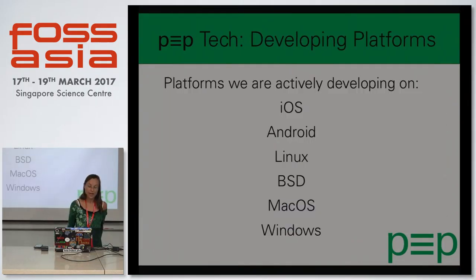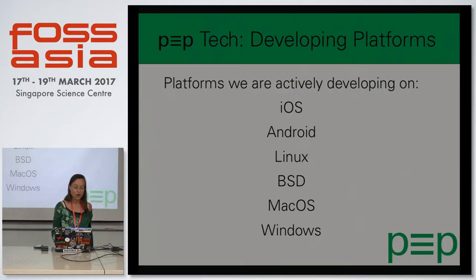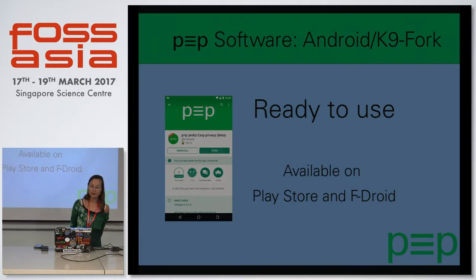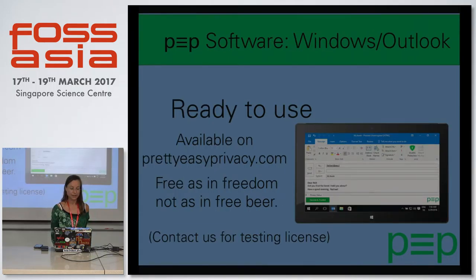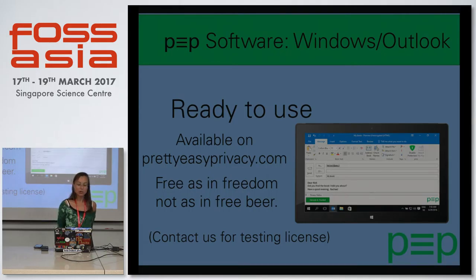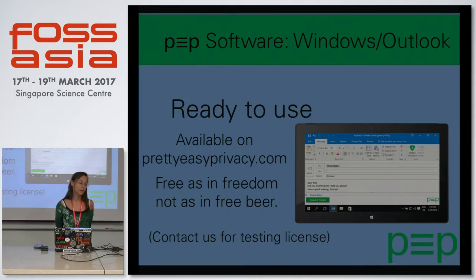Development is happening on multiple platforms: iOS, Android, Linux, BSD, macOS, and Windows. What's already out there is an Android fork available on the Play Store and on F-Droid, as well as an Outlook plugin available on prettyeasyprivacy.com. It's free as in freedom but not free as in free beer — but if you want to test it out, contact us for a testing license and just mention FOSS Asia.